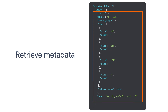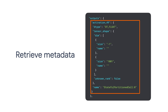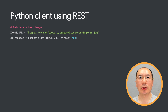Here we can see the input tensor name, data type, and shape. It also shows the output tensor shape, data type, and et cetera. It's usually a good practice to double-check the metadata before you start sending requests to TensorFlow Serving.